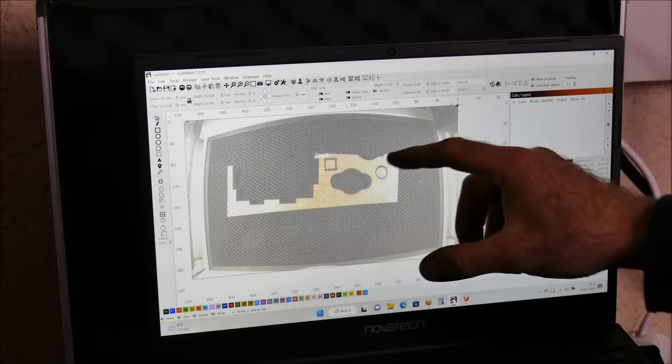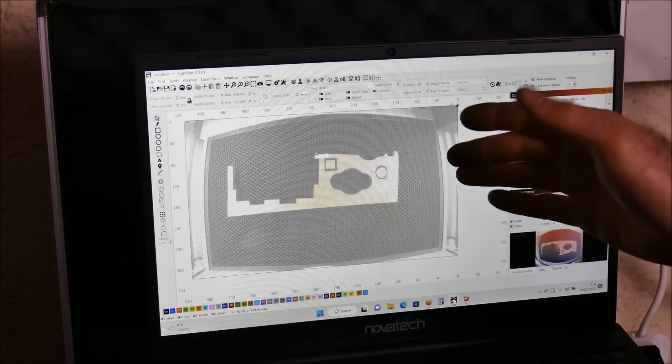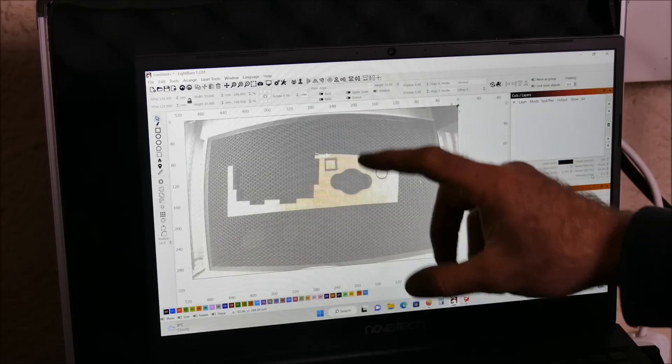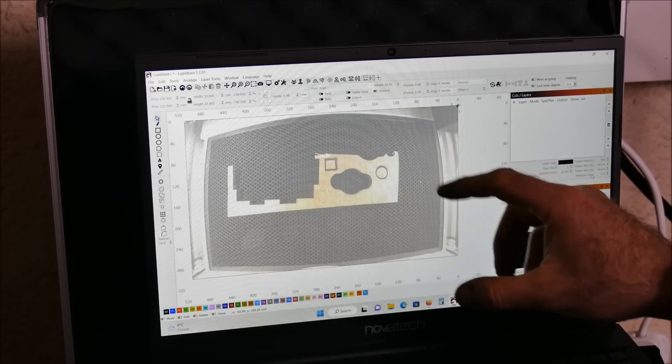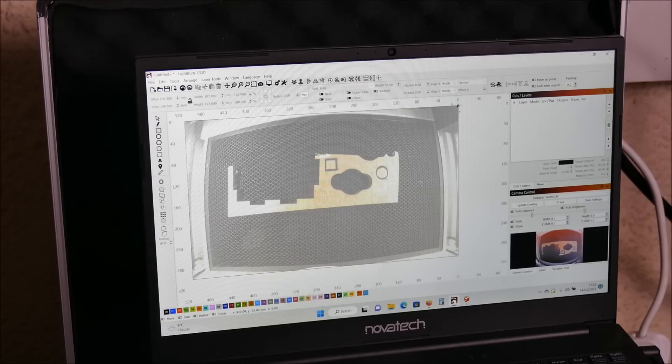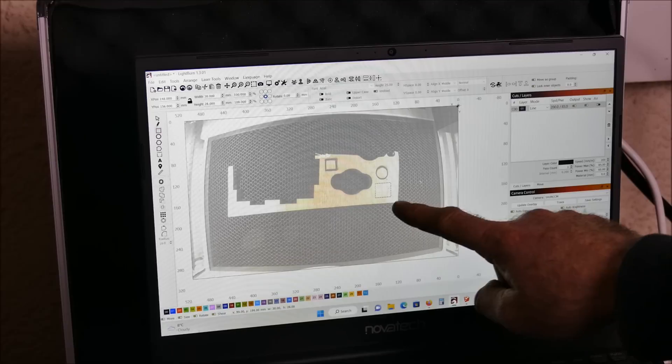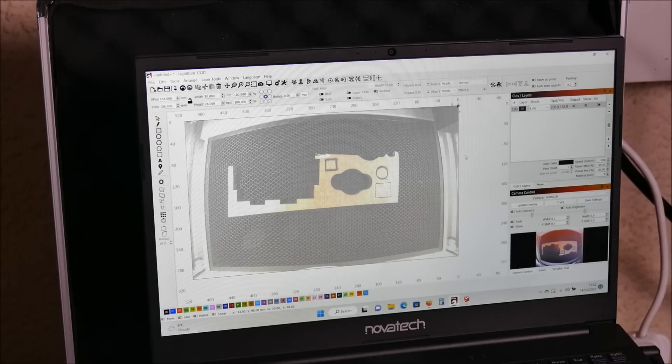So the way it's meant to work is we're projecting an image of the work area within the software. That way we can accurately position our pieces when cutting it onto a piece of board. So for example within Lightburn we can actually draw shapes accurately. So if I put that there. You can see I've drawn a little square just here. Just set the parameters.